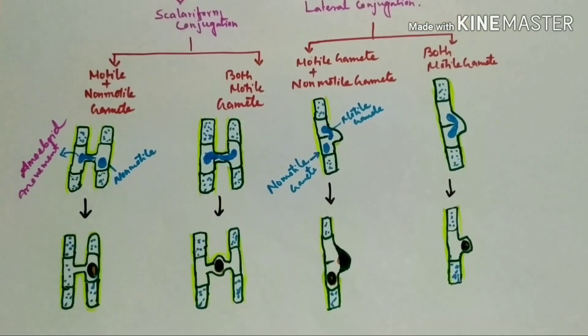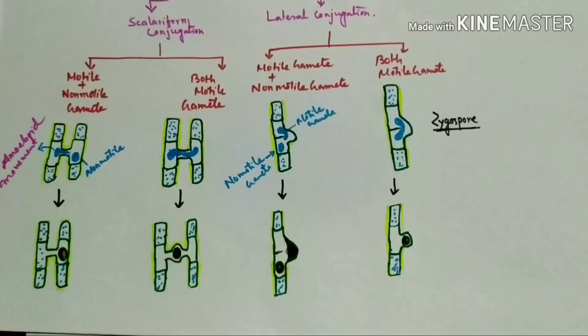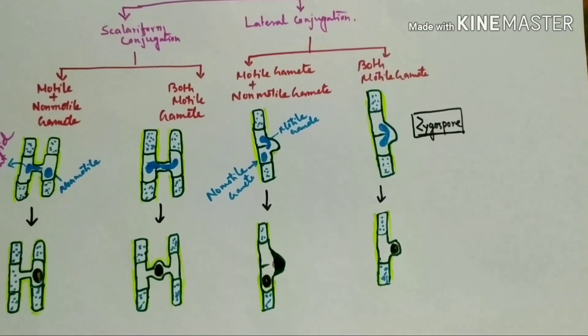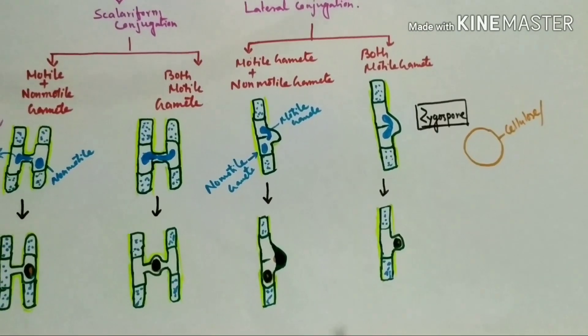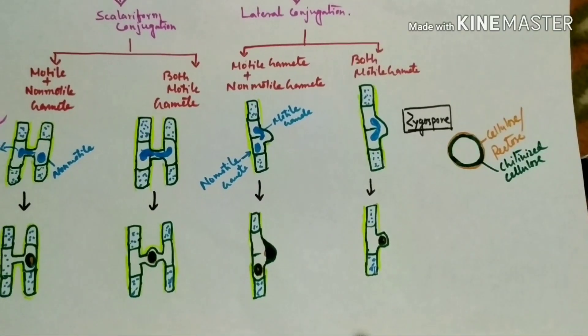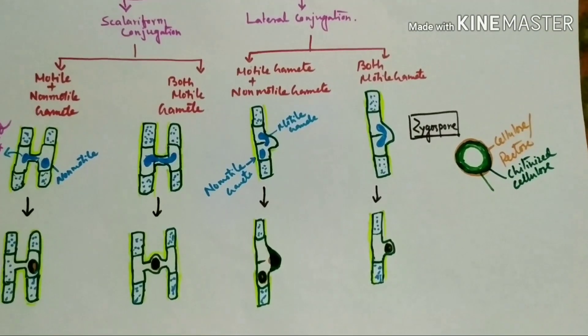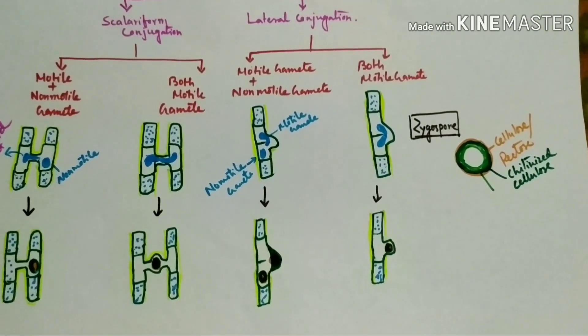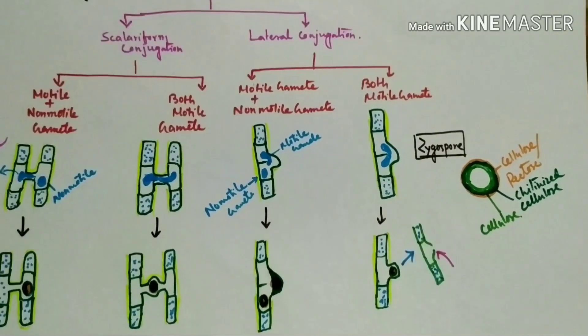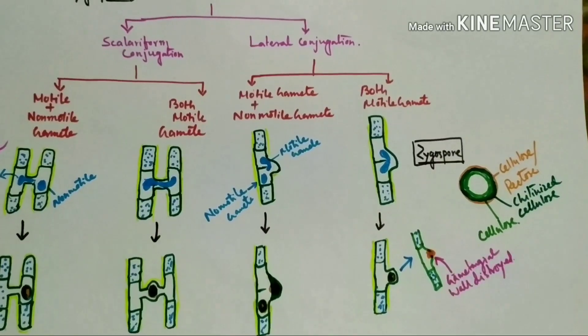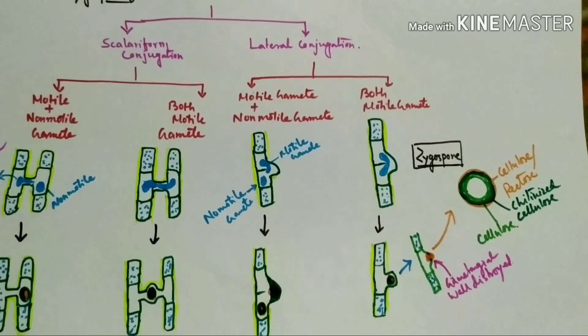Now after fusion, zygospore is produced. So this is fertilization. Now about zygospore: zygospore contains three layers - outer cellulose or pectose, in the middle cutinized cellulose, and inner layer composed by cellulose. After several months, gametangial wall destroys and zygospore removes from this gametangial wall.